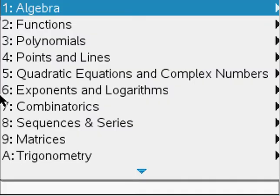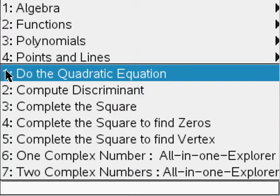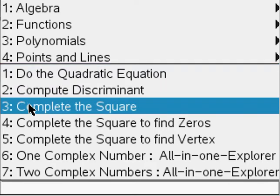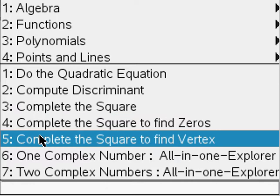And I'm not joking, Algebra Made Easy has everything from algebra, functions, polynomials, points, lines, quadratic equations, and complex numbers. And in every folder in the Algebra Made Easy app, there's also little folders in there. We have complete the square, complete the square to find zeros, complete the square to find vertex, everything.